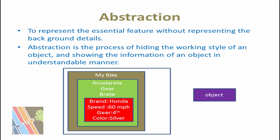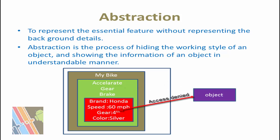Now, what is abstraction? Abstraction means hiding the non-essential features and showing only the essential features — this is called the user view. For example, consider a bike with gear, brake, and the brand Honda, speed 60 mph, gear is fourth, and color is silver. The object has access to the data: accelerate, gear, and brake — but it does not have access to brand, speed, gear color. So you can restrict access — this is called abstraction, which is the user view.